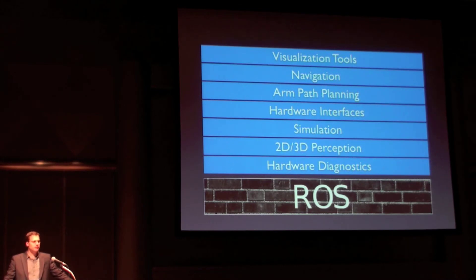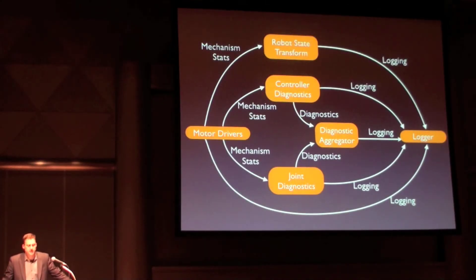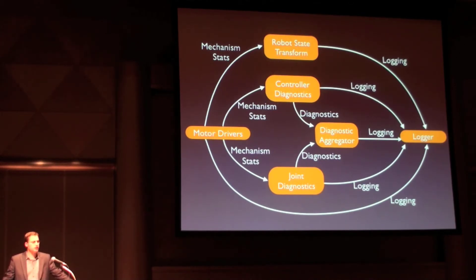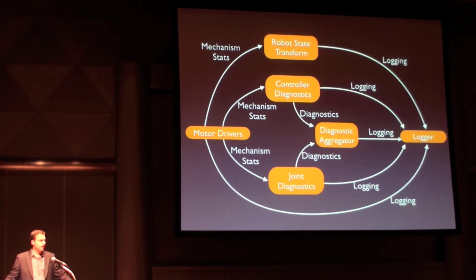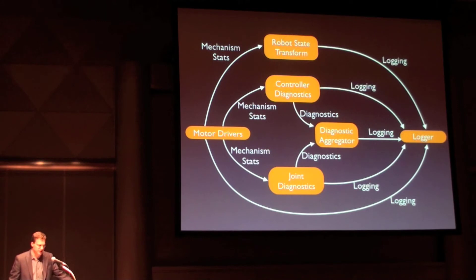I want to highlight some of the developer tools that are part of Ross. This simple visual example shows the processes and data streams for the diagnostic system in Ross. An actual full robot system like the PR2 tends to have about 100 processes. In Ross, these processes can be run easily across many computers, and these data streams between the processes can be anything — including diagnostic information, sensor data, or commands. One key feature of Ross is that any data stream in the system can be accessed anywhere at any time.